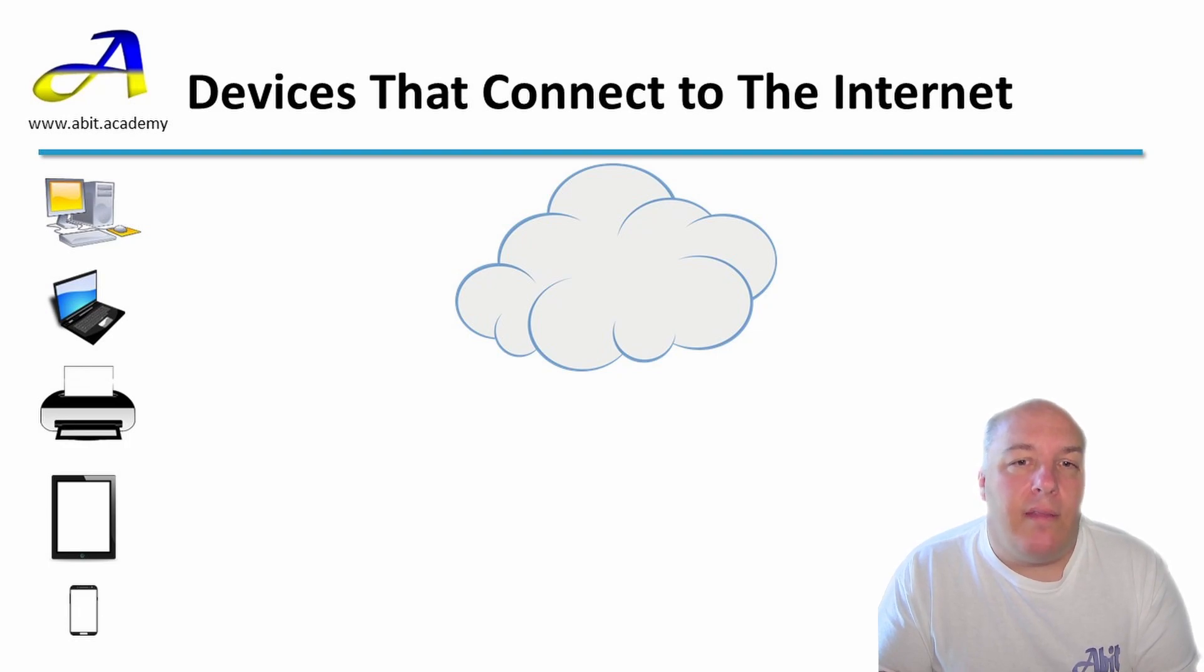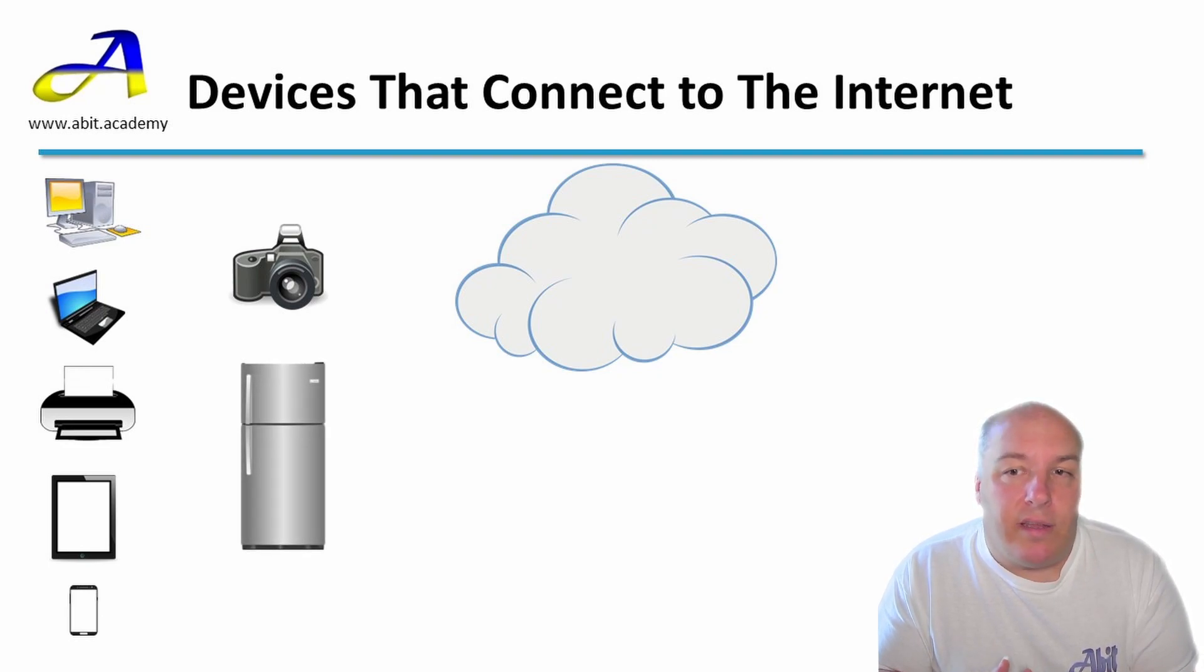There are many other devices that can connect to the internet such as printers to automatically order replacement ink and paper when they are running low, or digital cameras that can automatically upload any pictures that are taken, or there are even some refrigerators that can be connected to the internet. I don't have one of these but I guess you can order new food when you're getting low. I guess there is something in always knowing you are able to have a fresh pint of milk in the fridge.